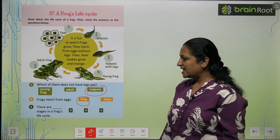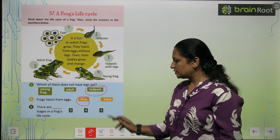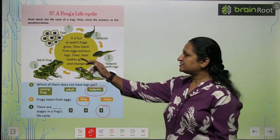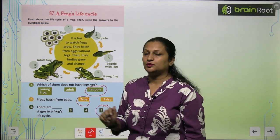There are ___ stages in a frog's life cycle. There are five stages. After five stages from eggs, the frog develops.